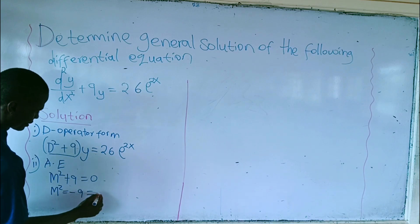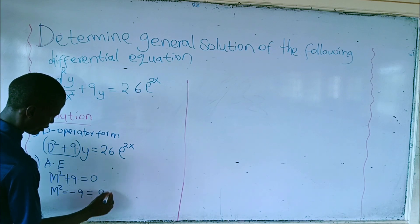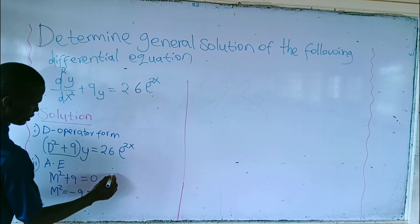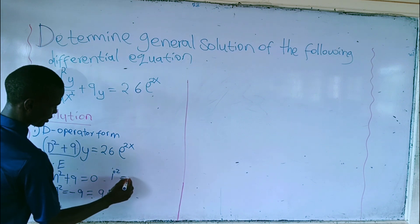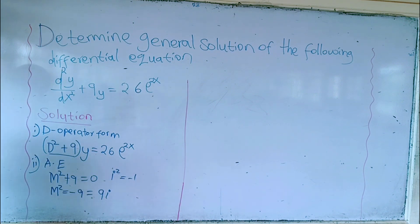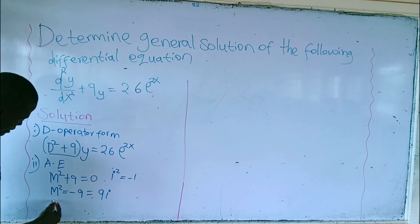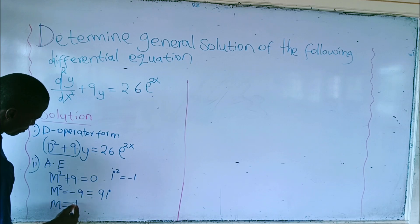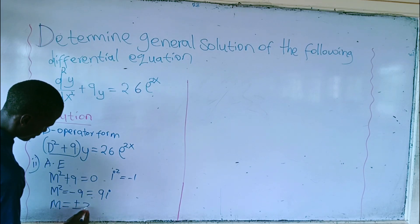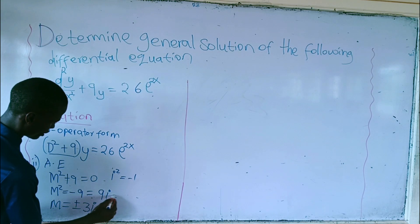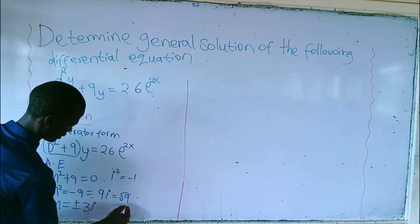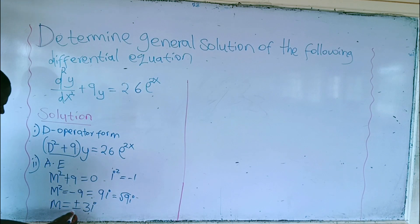This is the same as 9 times the imaginary number, because i squared is the same as negative 1. So it is the same as 9i, imaginary i. Then from there, m will be plus or minus 3i, because the square root of 9 gives positive or negative 3i.